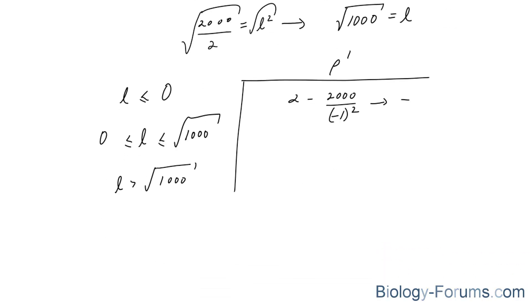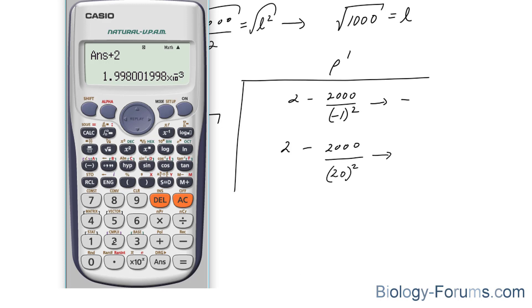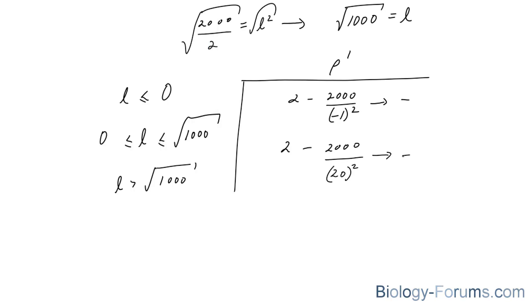We just need to know its symbol. We're going to choose a number between 0 and approximately 30. So let's pick 20. 2,000 over 20 to the power of 2. Let's use our calculator for this. 2 minus 2,000 over 20 to the power of 2 is equal to a negative number.